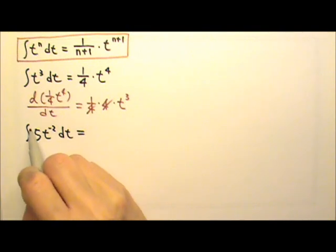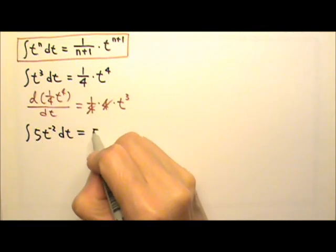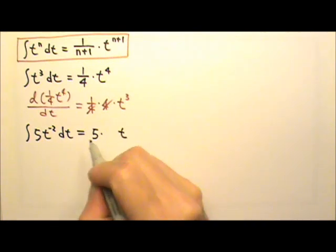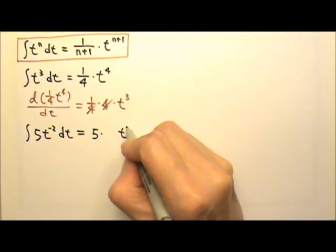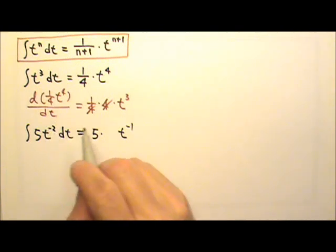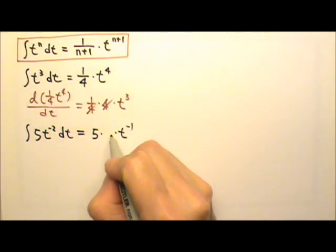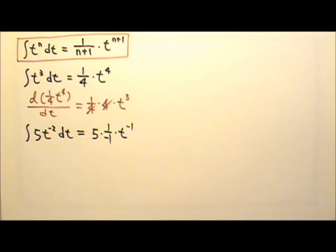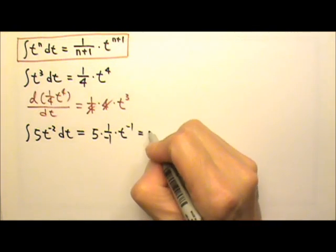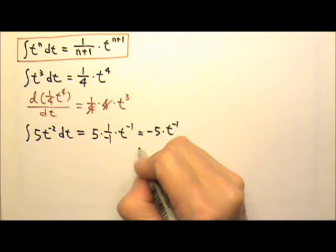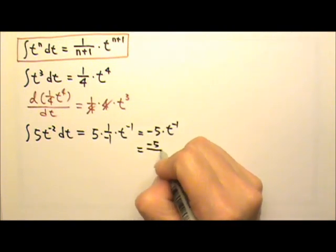The constant coefficient five stays right there. Then we gain one degree of power, so t to the negative two becomes t to the negative one, because we add one to negative two. And then we have to remember to multiply by one over this new exponent, so one over negative one. This gives us negative five times t to the negative one, which is also negative five over t.